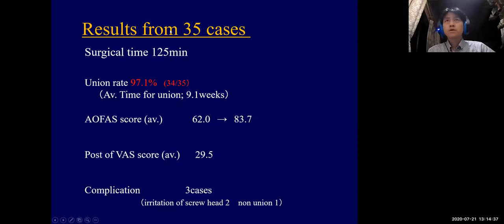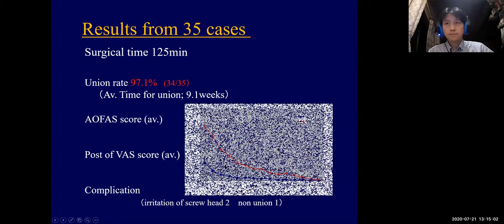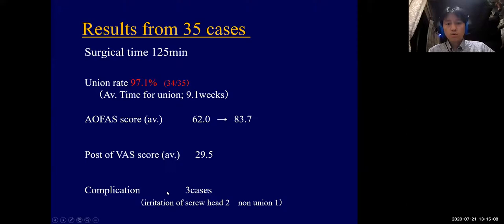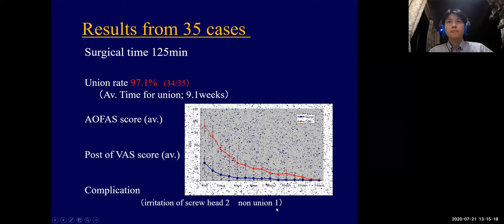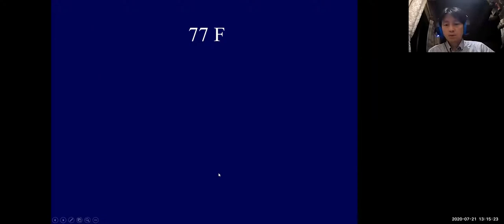Results from 35 cases: surgical time was 125 minutes, union rate was 97.1%, and AOFAS score improved from 62 to 83.7. Post-operative JSSF score was 29.5. Complications were seen in three cases: two cases of screw head irritation and one case of nonunion. This slide shows a 77-year-old female with stage 3B ankle OA.